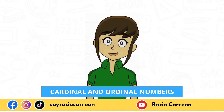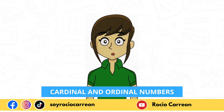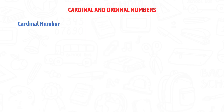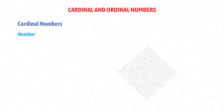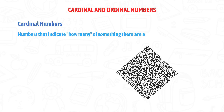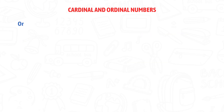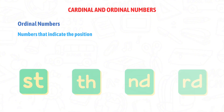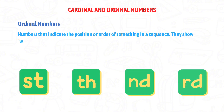But before we start, let's review some basic concepts. Cardinal numbers: numbers that indicate how many of something there are, and they are used for counting. Ordinal numbers: numbers that indicate the position or order of something in a sequence — they show what order something is in.